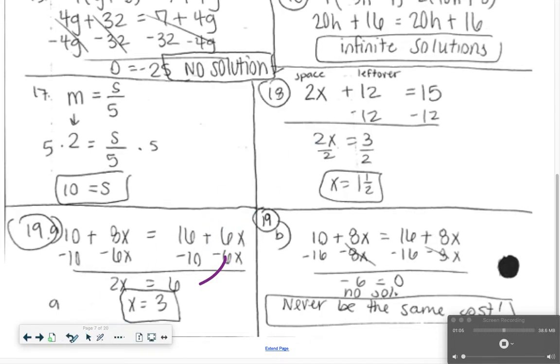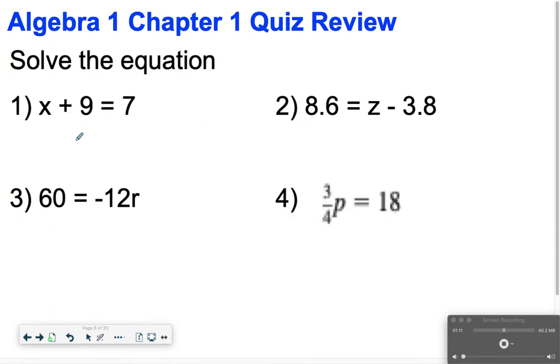What we're going to go ahead and do is I'm going to work through each question. So you can fast forward to the questions you may need help with. I'm going to start with number 1. So we're going to solve the equation. I'm going to subtract 9 from both sides to get x is equal to negative 2.